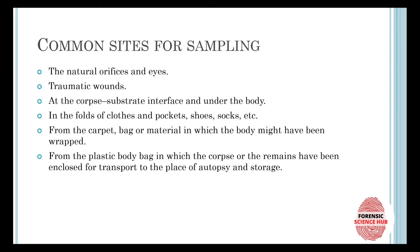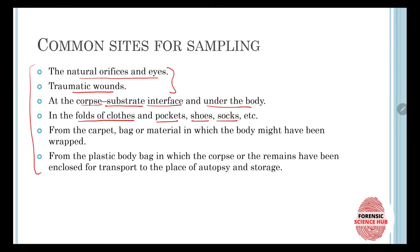The common sites of sampling are the natural orifices and eyes, and traumatic wounds. We can look for insects at the corpse-substrate interface and also under the body. They can be found in the folds of clothes, pockets, shoes, and socks. Also check from the carpet, bag, or any material in which the body might have been wrapped, and from the plastic body bag in which the corpse or remains have been enclosed for transport to the place of autopsy and storage.